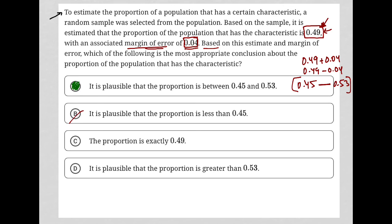Choice C, the proportion is exactly 0.49. Well, no, that's why we have a margin of error. And choice D, it is plausible that the proportion is greater than 0.53. Again, no, because that would defeat the purpose of having a margin of error. It is not plausible, although it is possible.